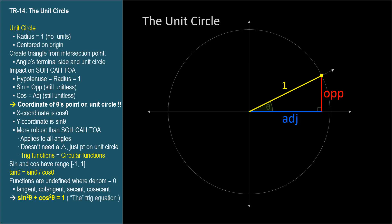SOHCAHTOA reminds us that sine equals opposite over hypotenuse, and cosine equals adjacent over hypotenuse. Substituting 1 for the hypotenuse we get, for unit circles,